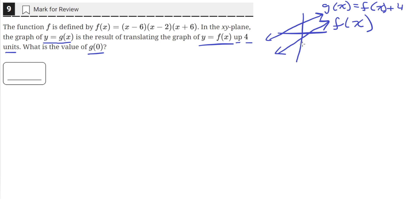Since everything is being translated up by 4 units, all the y values, the g(x) values, would be 4 units more.